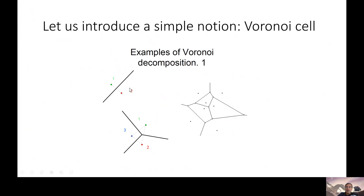You can do the same in three-dimensional space, but in that case, instead of a line, you plot a two-dimensional plane. And if you do it in n-dimensional space, this becomes an n-dimensional hyperplane, which separates the space into two regions.